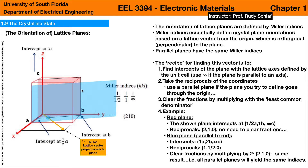As stated earlier, Miller indices essentially give us a vector that is perpendicular to the plane we are defining. Drawing the vector from the Miller indices — 2a, 1b, 0c — it appears as an orange vector that looks pretty perpendicular to those planes.